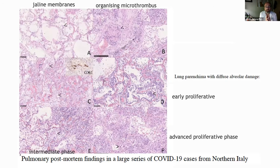We don't have too many pathological studies because in most countries we couldn't do autopsies to determine the different patterns associated with COVID-19, due to the risk of infection. We also didn't do too many transbronchial biopsies because of the risk of transmission of COVID-19.